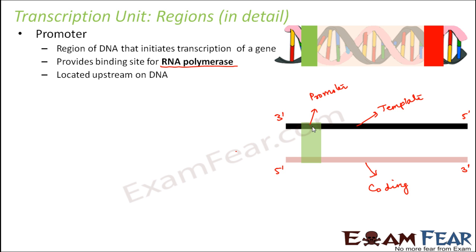The promoter is located upstream on DNA. 'Upstream' refers to the upper side — like a river flowing from the top of a hill to the bottom: the upper side is called upstream where it starts, and towards the lower side is downstream. Similarly, where the entire transcription unit starts is the upstream, and where it ends — towards the terminator side — is the downstream of DNA.